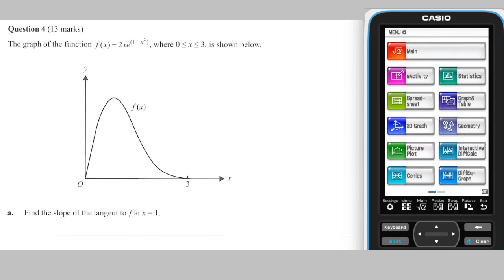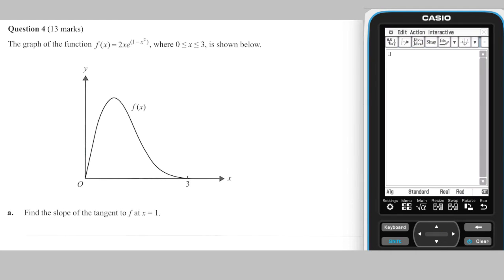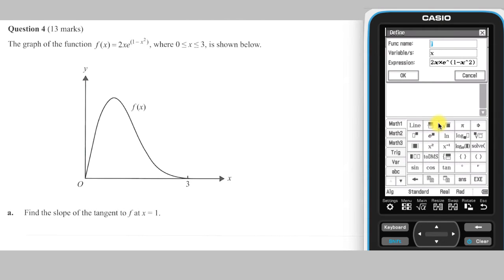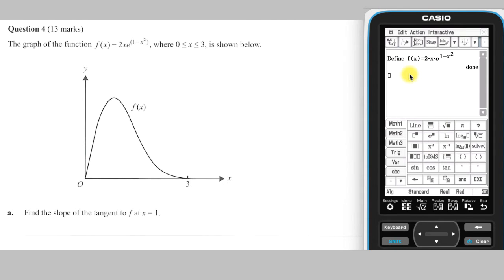I'm going to define this function as f(x) on my ClassPad. In part a, we need to find the slope of the tangent to the graph of y = f(x) at the point where x = 1. I'm going to do this by finding f'(1) using my ClassPad.